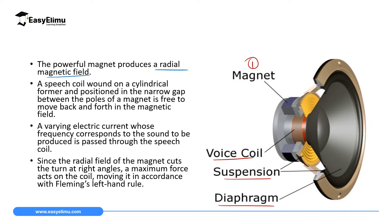You connect to the coil a varying electric current whose frequency corresponds to the sound being produced. Since the radial field of the magnet cuts at 90 degrees to the coil, a maximum force acts on the coil, moving it in accordance with Fleming's left hand rule. This voice coil will move back and forth, and in that process it will make the flexible suspension and diaphragm vibrate.